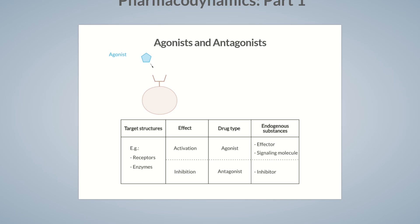Let's assume that the drug is an agonist that elicits signal transduction at a receptor. Principally, it can act in one of two ways. The agonist could bind to the receptor and produce an effect similar to that of the endogenous signaling molecule. Such drugs are termed direct agonists.